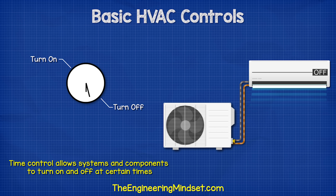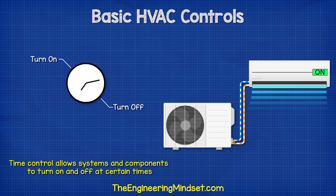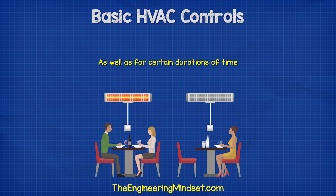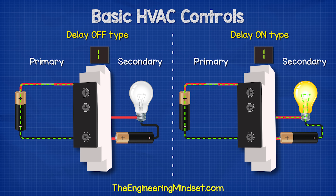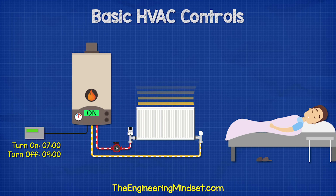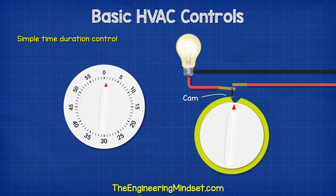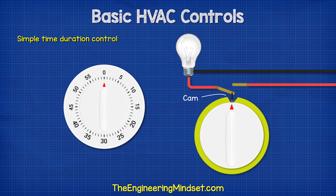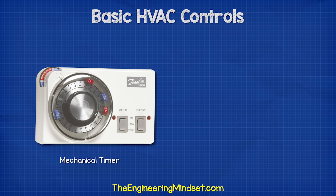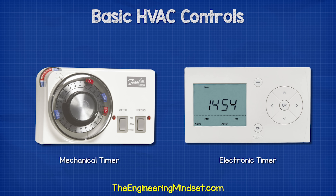Time control allows systems and components to turn on and off at certain times, as well as for certain durations of time, or we can delay something turning on or off for a certain amount of time. For example, on a cold morning, we want the heating to turn on before we wake up so that the house is nice and warm. A simple time control uses a cam to push contacts together and complete a circuit. As the time dial rotates, it forces the cam to open and close the contacts to turn the heating on and off. Timers used to all be mechanical; however, these days, timers are usually electronic and typically use relays to open and close circuits.